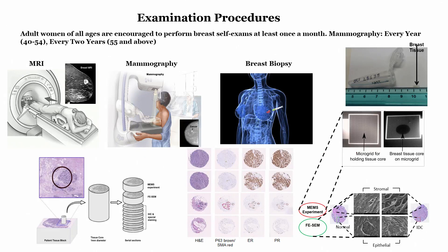For breast cancer examination, all adult women are encouraged to perform breast self-exams at least once a month to check for abnormalities. Mammography is advised yearly for ages 40 to 54 and every two years for ages 55 and above. Techniques include MRI to view suspected regions and mammography.